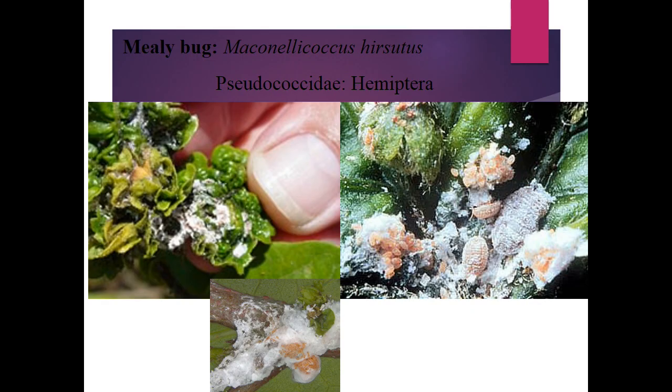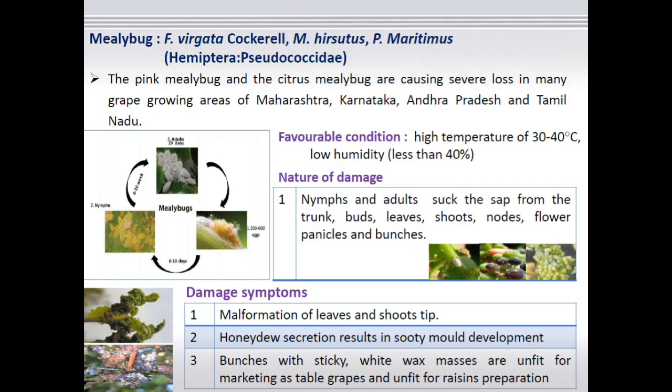Coming to the mealybug, there are two important species which occur on grapes: one is Phenacoccus virgata and another one is Maconellicoccus hirsutus. These species are quite persistent and are found throughout the year in almost all parts of India where grapes are grown — quite severe in major grape-growing states. Both adults and nymphs cause damage, and they are found congregating on leaves, shoots, nodes, flowers, as well as on the bunches.